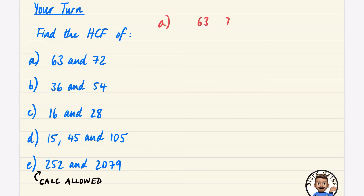For part a, we've got 63 and 72. I can spot straight away that they're both in the nine times table: 9 × 7 = 63 and 9 × 8 = 72. Since 7 and 8 have no more common factors, the highest common factor is 9.